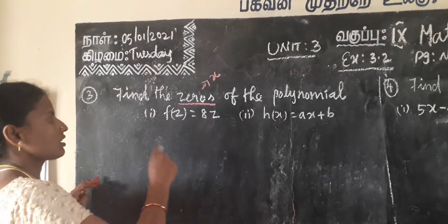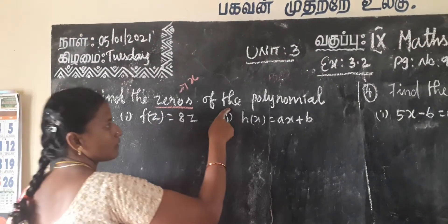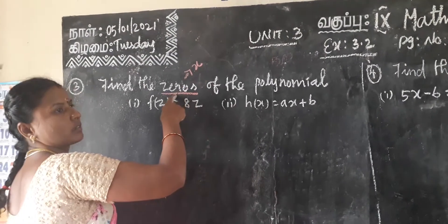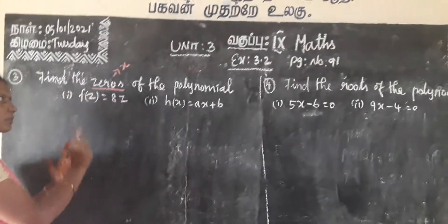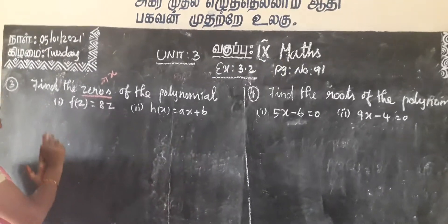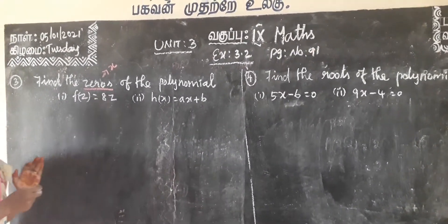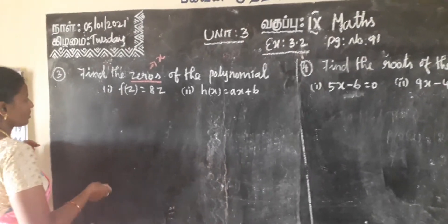They also ask another method called roots of the polynomial. Roots of the polynomial means the same thing — it is likewise the same as zeros of the polynomial.